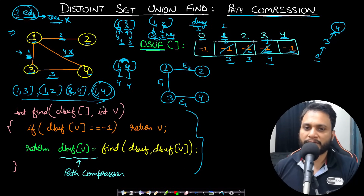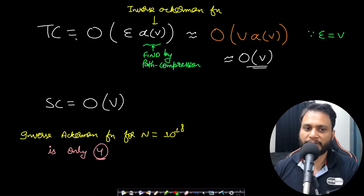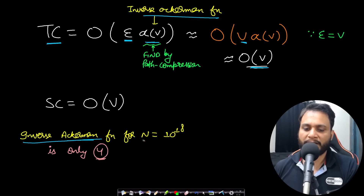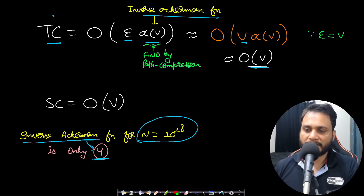The find function uses path compression: for a node v, if the disjoint set value is -1 then v is its own parent; otherwise recursively find the absolute parent and save it, so future calls go directly to the root. The time complexity is O(V × α(V)) where α is the inverse Ackermann function — for n up to 10¹⁸, α is only 4, effectively O(1). Since the number of edges equals the number of vertices for this problem, the overall time complexity is O(V) and space complexity is O(V) for the disjoint set array.